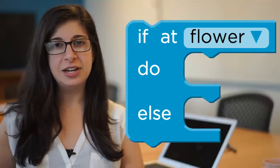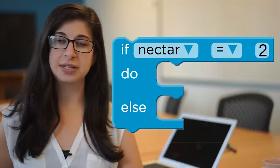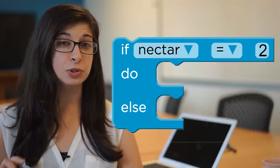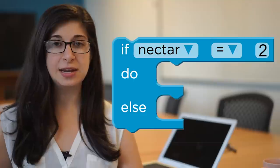The top of our if-else block says if at flower, but the top of our block could say other things like if nectar equals two or if there's a path ahead. And our block will behave in the same way.